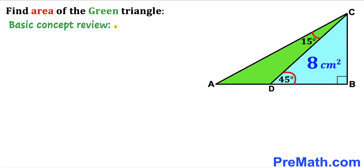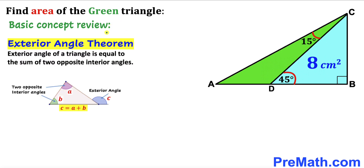Before we proceed any further let me go over the basic review. Let's recall the exterior angle theorem. According to this theorem, the exterior angle of a triangle is equal to the sum of two opposite interior angles, as you can see in this diagram.